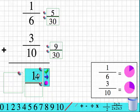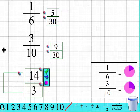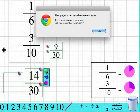So I'm going to drag my answer into these bigger fraction boxes. Now the program will not accept an answer unless it's reduced to its lowest term, so watch what happens. When I go to check my answer with this little green check mark, it's going to say, sorry your answer is incorrect. Did you remember to simplify? And no, I did not.